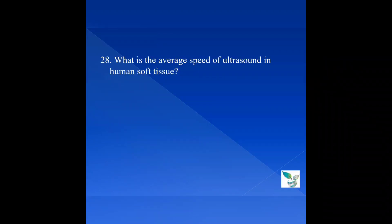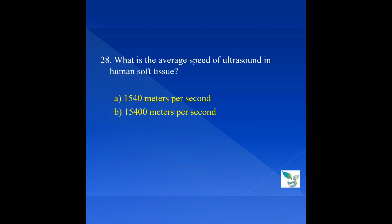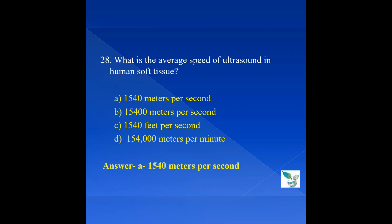Question number 28: What is the average speed of ultrasound in human soft tissue? Option A, 1540 meters per second; option B, 15400 meters per second; option C, 1540 feet per second; option D, 154,000 meters per minute. The answer is option A — 1540 meters per second.